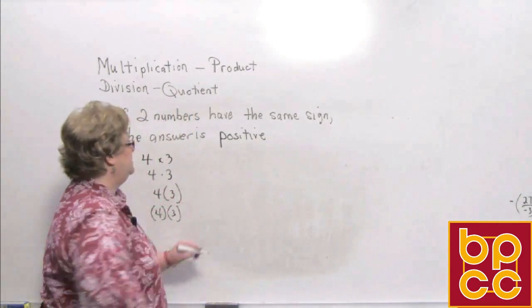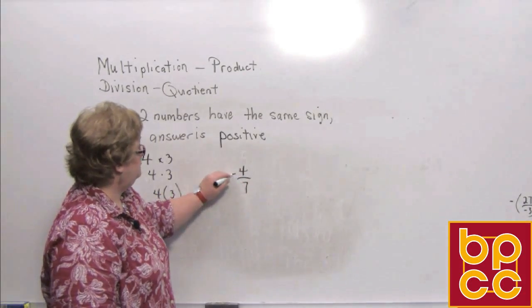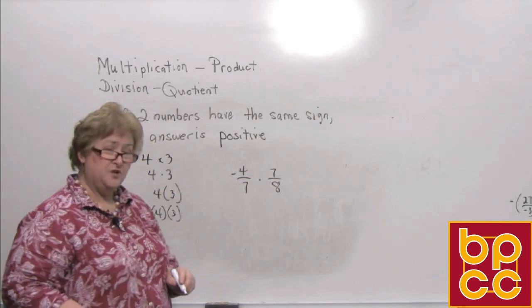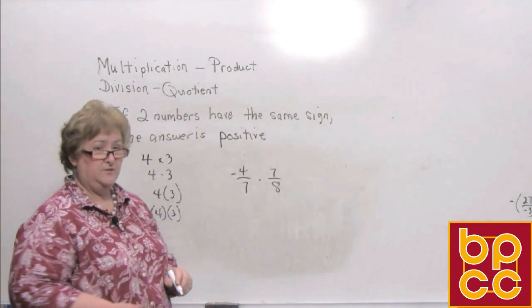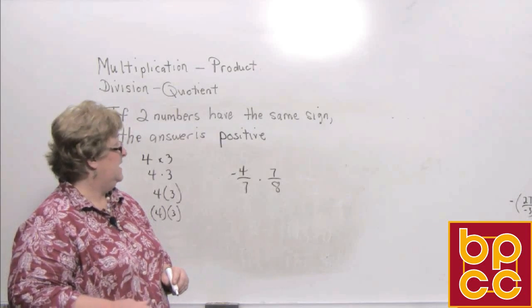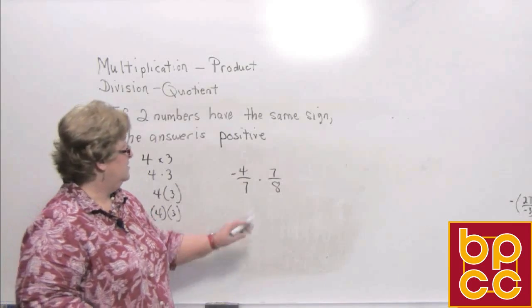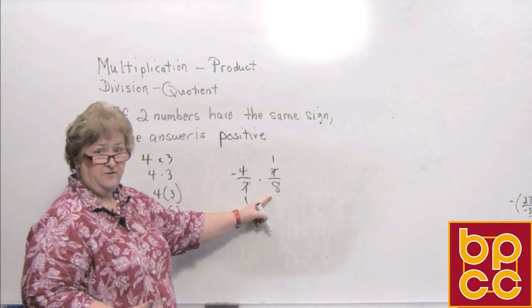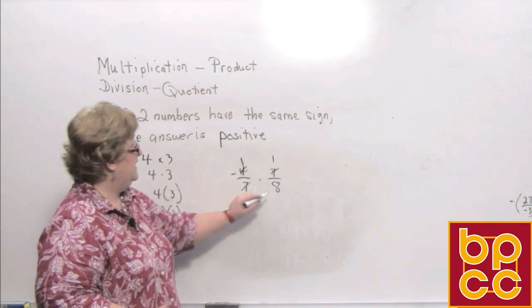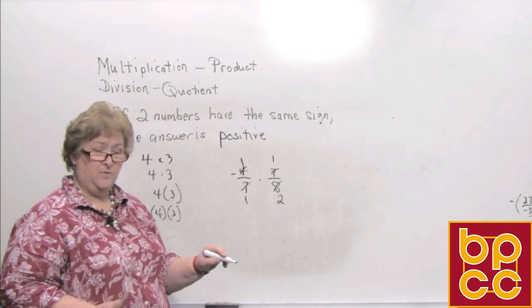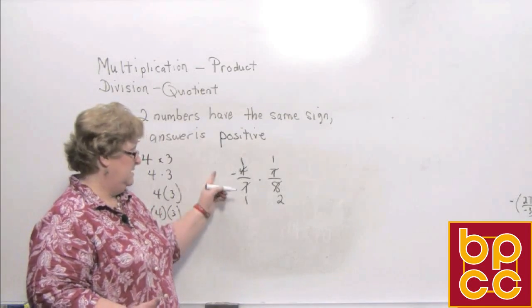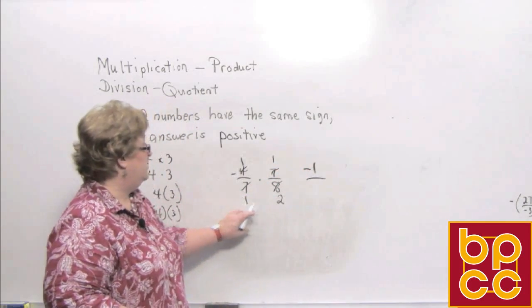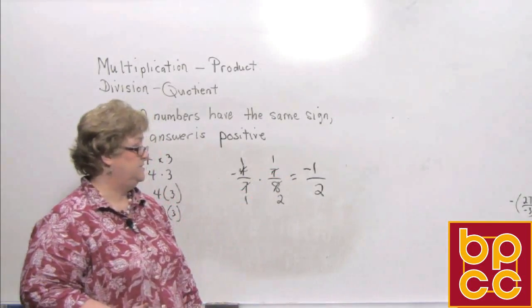Let's try another one. Let's say we have a negative 4 sevenths times 7 eighths. I know the answer is going to be negative because I've only got one negative fraction here. To keep numbers smaller, I'll do cross-outs: 7 goes into both 7's, giving 1 and 1. And 4 goes into both 4 and 8, giving 1 and 2 — remember, that's a negative 1. Now multiplying top times top and bottom times bottom: negative 1 times 1 is negative 1, and 1 times 2 is 2. So my answer is a negative 1 half.